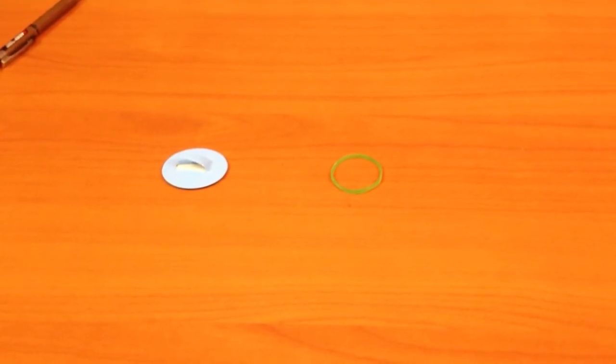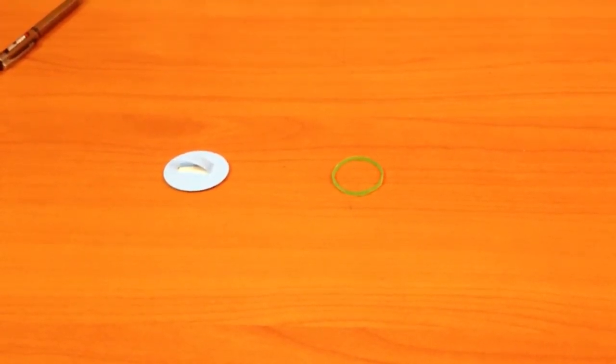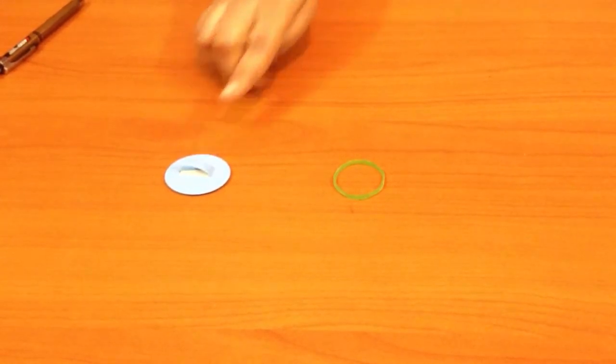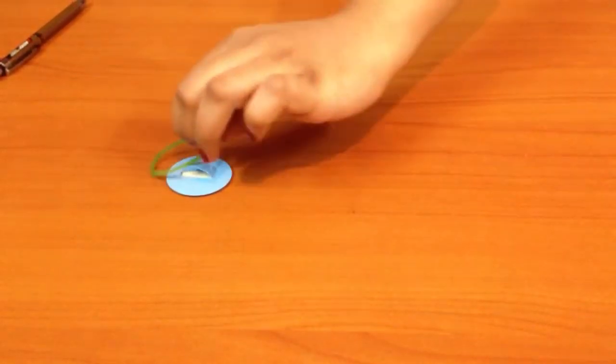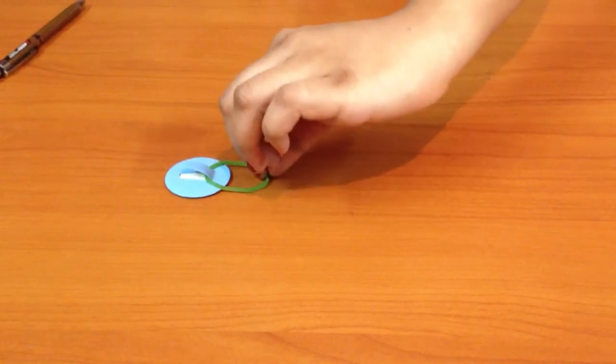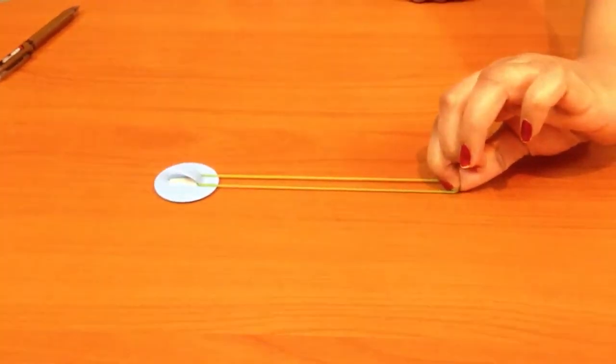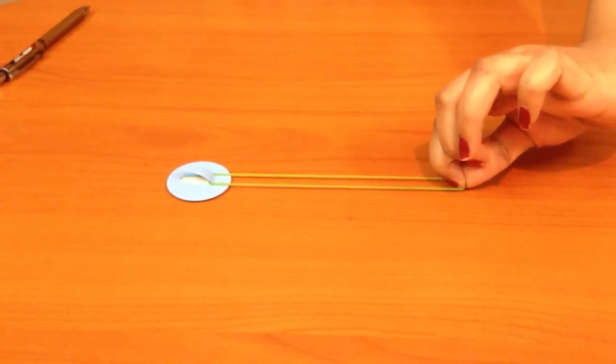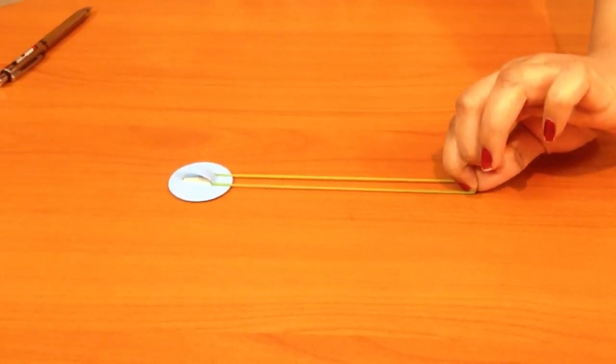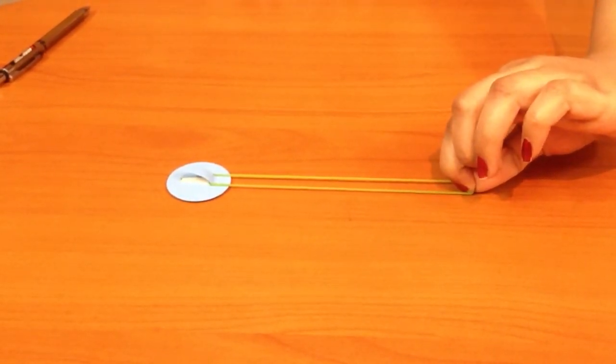For this activity, we need a rubber band and a wall hook. Put a rubber band in the wall hook. Extend the rubber band. When the rubber band is extended, a force is produced called the elastic force.